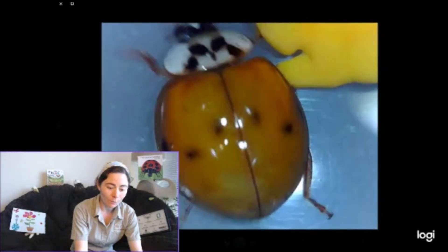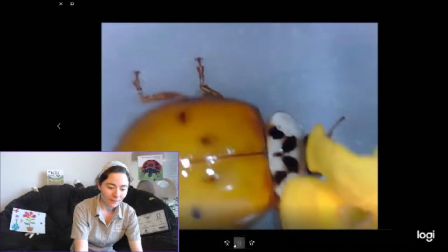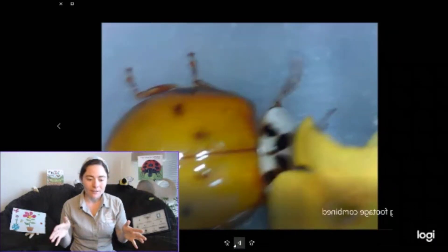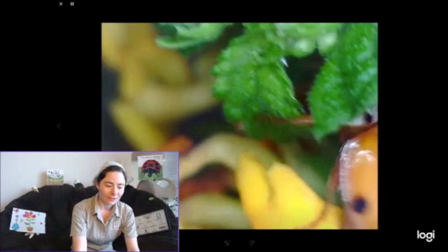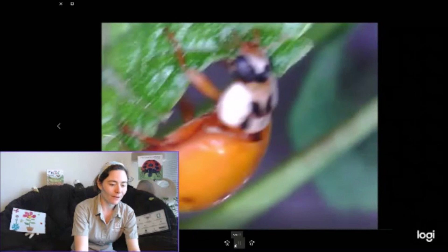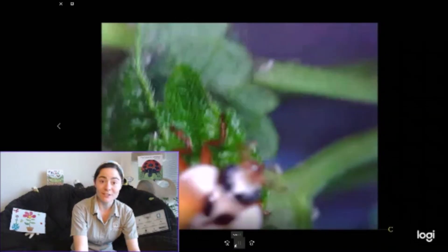You see our ladybug? He has a nice red coat with black spots on his coat. Let's count those spots. He has one, two, three, four black spots. Awesome. So let's see our ladybug crawl around on this lovely flower. Oh my goodness. He moves so fast.